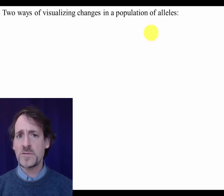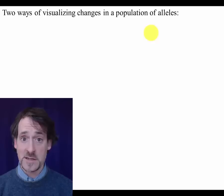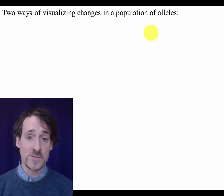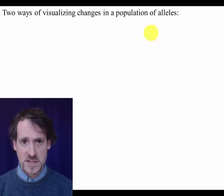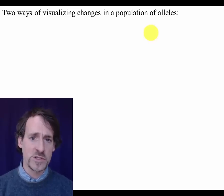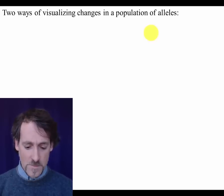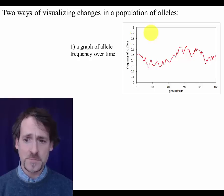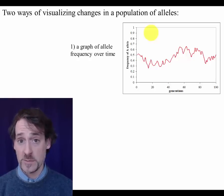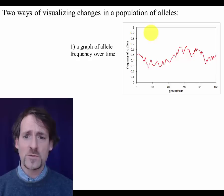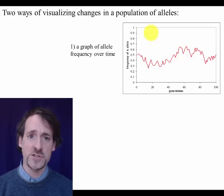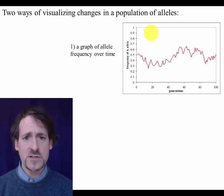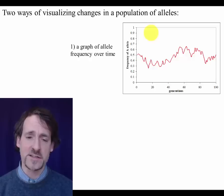I'm going to introduce a couple of different ways of visualizing the effects of drift on a population of alleles. And you'll be seeing these at various points during this lecture. One way that you can visualize the changes in a population of alleles over time is with a graph of allele frequency. And when you graph what's going on in a population due to drift, you can imagine the allele frequencies are going to wander or wobble a lot, more or less like this graph.